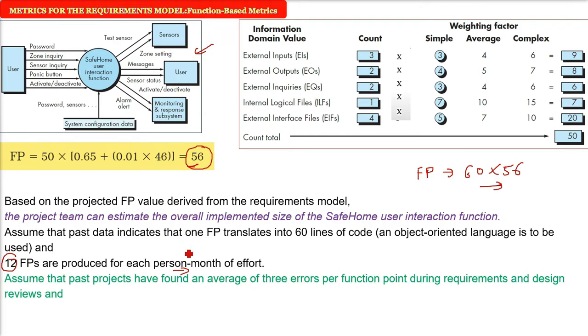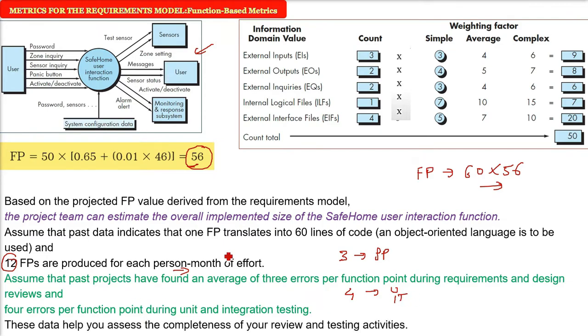Now just assume that in past projects, it was found that the average of three errors per function point is found during the requirement and design review. So you can assume there are 56 function points. There are four errors per function point during unit and integration. So 56 into 4. So you know about the number of errors per function point and function point is known. So the line of code is known, effort is known, number of errors are known. So this kind of data helps you assess the completeness of a review, also the testing activities. How much code you have written, what effort you have to put and the review and testing activities. That is why this function-based metrics is so important.